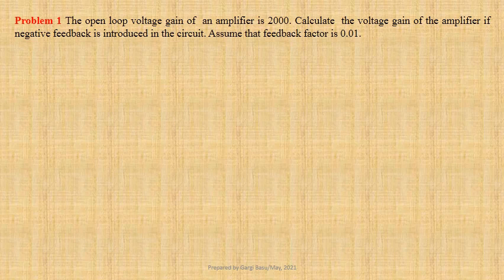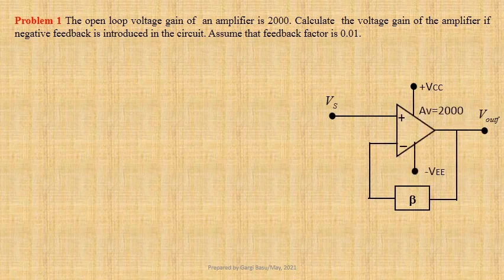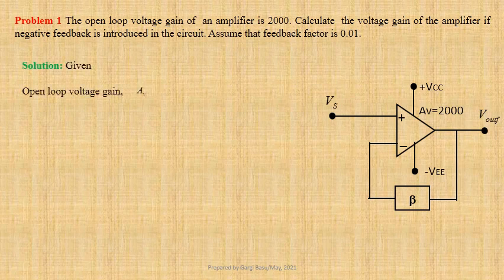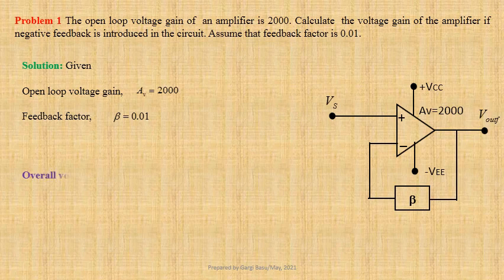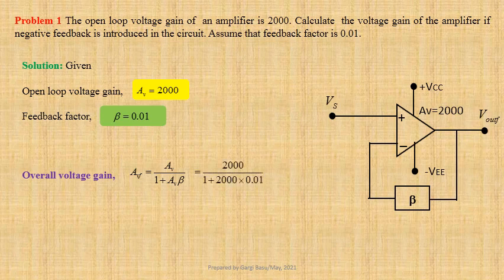Problem 1: The open loop voltage gain of an amplifier is 2000. We have to determine the voltage gain of the amplifier if negative feedback is introduced in the circuit with a feedback factor of 0.01. Given: open loop voltage gain Av = 2000, feedback factor β = 0.01. Overall voltage gain AvF = Av / (1 + Av × β) = 2000 / (1 + 2000 × 0.01) = 95.238.